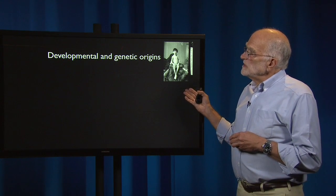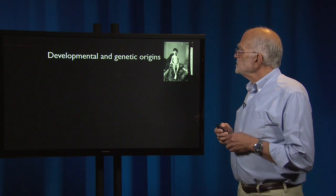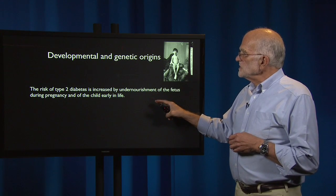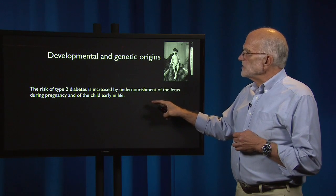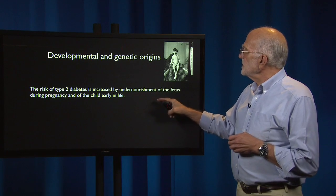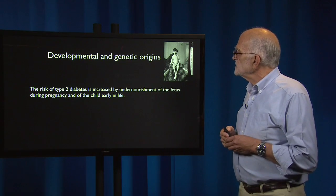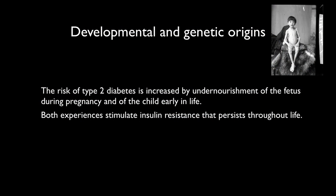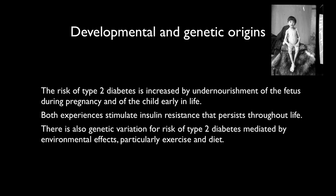Type 2 diabetes also has developmental and genetic origins. The risk of type 2 diabetes is increased by undernourishment of the fetus during pregnancy and of children early in life. Both of those experiences stimulate insulin resistance that can persist throughout life. People also vary genetically for risk of type 2 diabetes, and that is mediated by environmental effects, particularly exercise and diet.